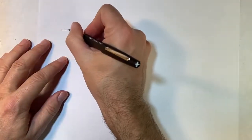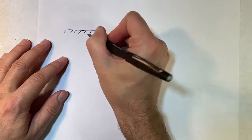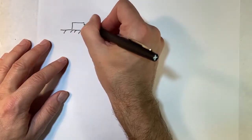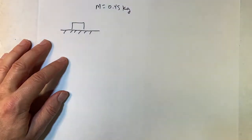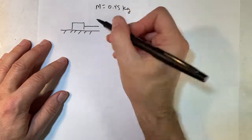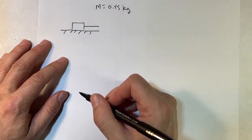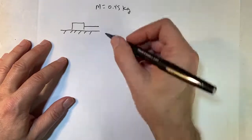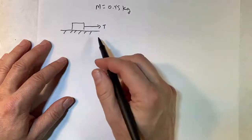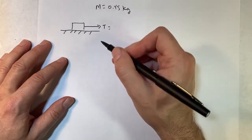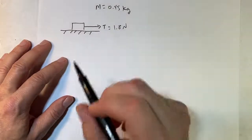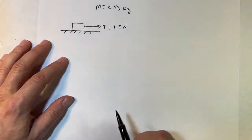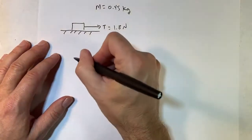Here's the situation: I have a block with a mass of 0.45 kilograms, and I pull it with a string. I pull with a tension — a scalar value — of 1.8 newtons, and at that instant it starts to slide.